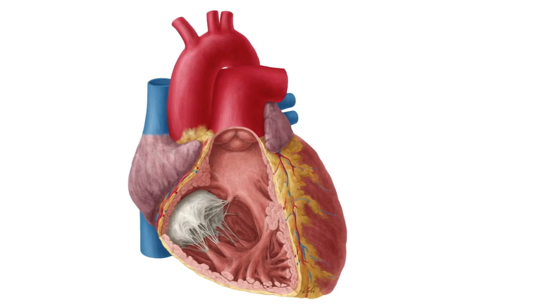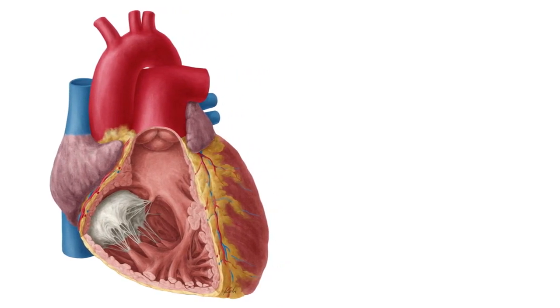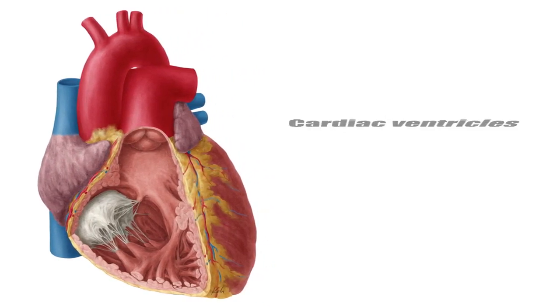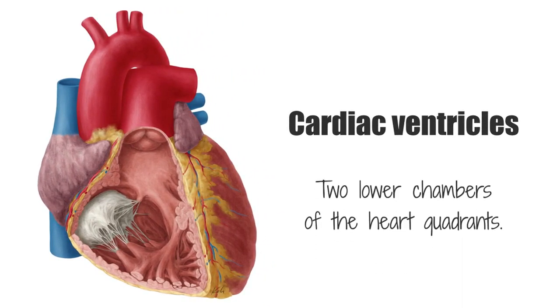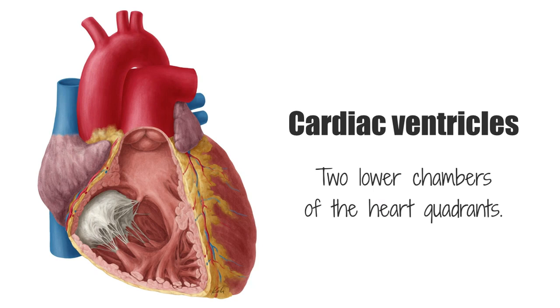The cardiac ventricles are the two lower chambers of the heart. They are larger and more apically narrowed than the atria.